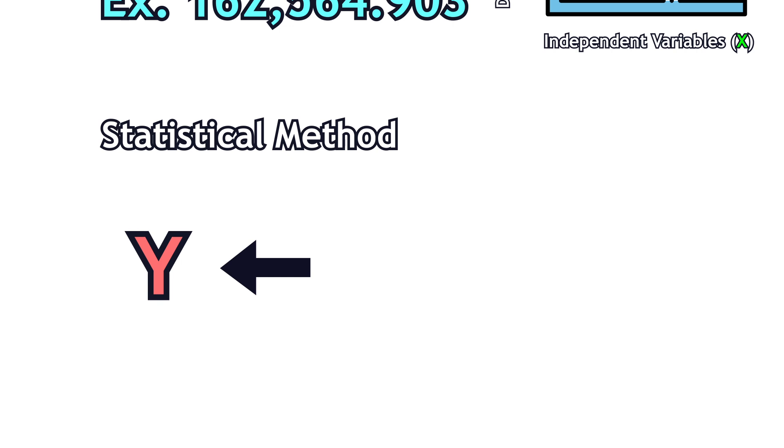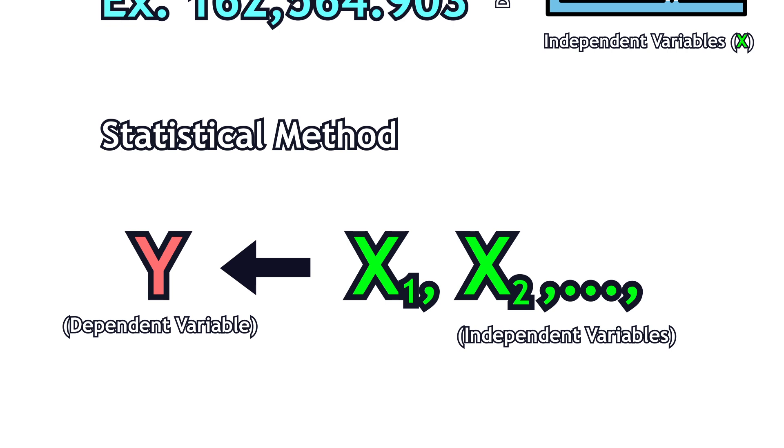The dependent variable is the variable you want to predict, while the independent variables are the variables you use for prediction.